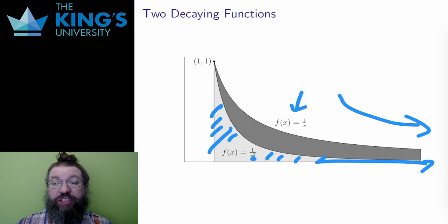But 1 over x does not decay fast enough. So the darker shade of area here, going out all the way to infinity, is actually an infinite amount of area. It's strange, but this is what the integral tells me.